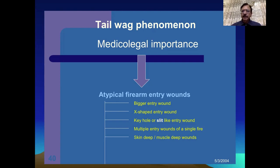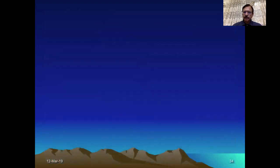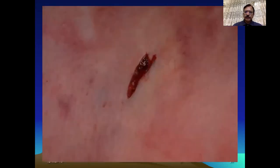Or terminally, when the velocity is so much reduced that the bullet has not got enough energy to enter deep tissues, it will only be lodged skin deep or muscle deep. These are the various phenomena which are medically important because of the tail wag. This is a keyhole type of wound produced by the lateral impact of the bullet.